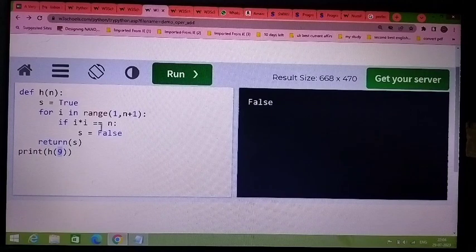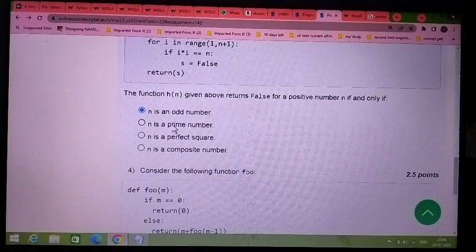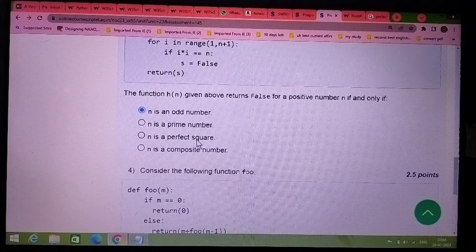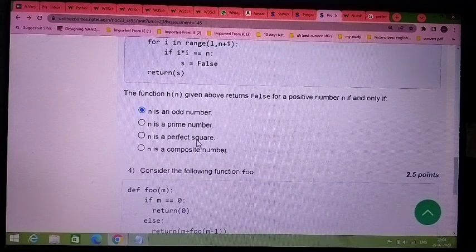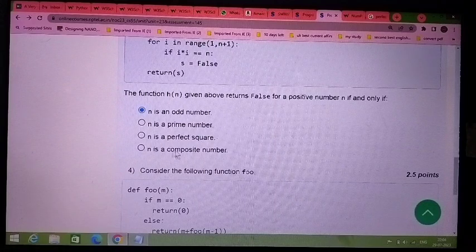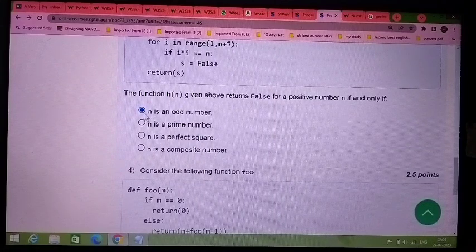The question asks for what value. Prime number is impossible because a prime number has only two factors. Perfect number—sum of all factors equals the number—is also not possible. Composite number not possible. So only this one: odd number.